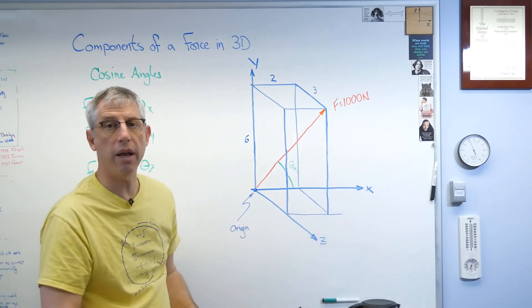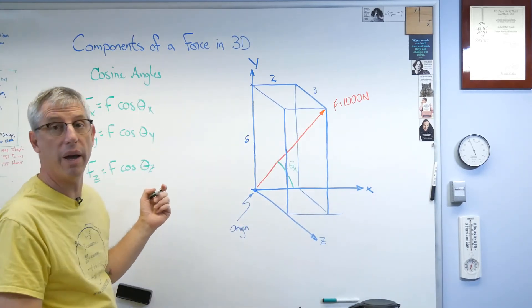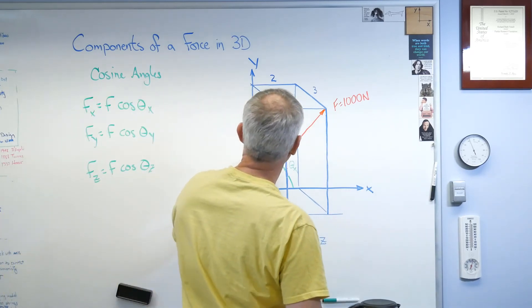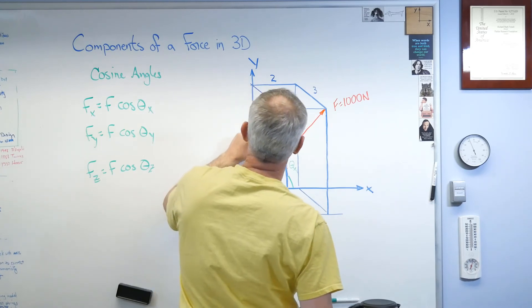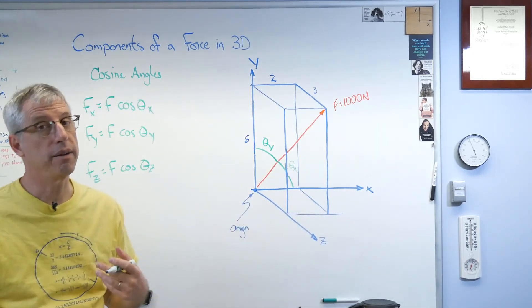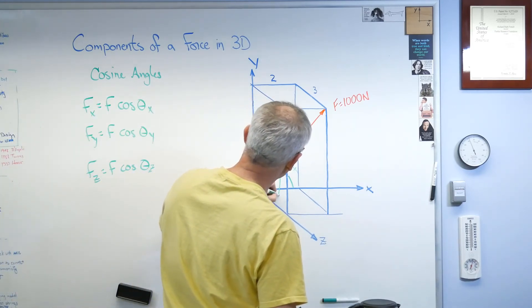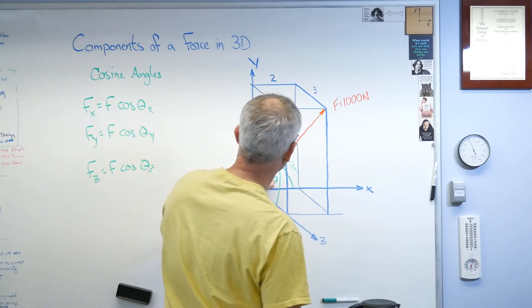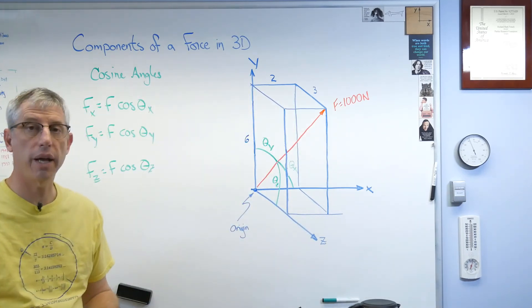And so it's actually a little bit of an angle here on this drawing. Now, if there's a theta x, there must be a theta y and a theta z, and there are. So theta y is the angle that goes from the vector to the y-axis, I should say. And guess what theta z is? Theta z goes from the vector to the z-axis. So there you go. Those are called cosine angles. That's what the picture looks like.